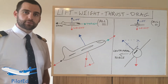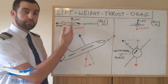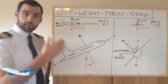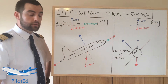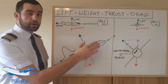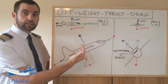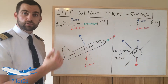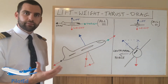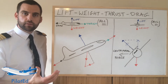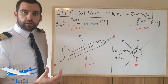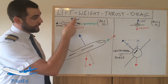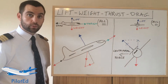So first let's talk about these four forces. Lift, perpendicular to the wings. Weight, down towards the centre of the earth. Thrust, generated by the engines. Drag, generated by the airframe as it goes through the air. In level, balanced, steady flight, thrust will be equal to drag and lift will be equal to weight.